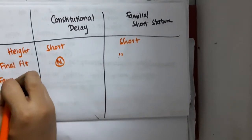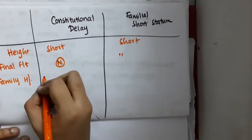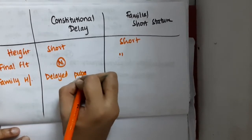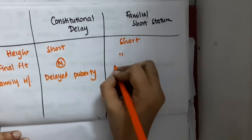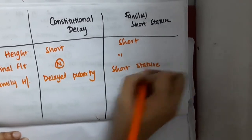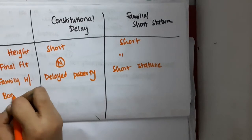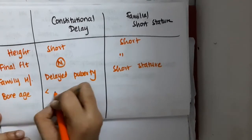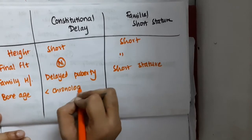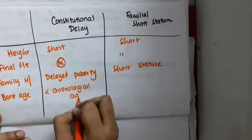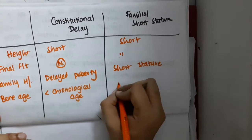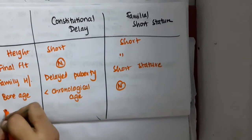If you see the family history, family history of delayed puberty is seen in constitutional delay, whereas family history of short stature is seen in familial short stature. Regarding bone age, it is less than chronological age in constitutional delay, whereas it is normal in familial short stature.